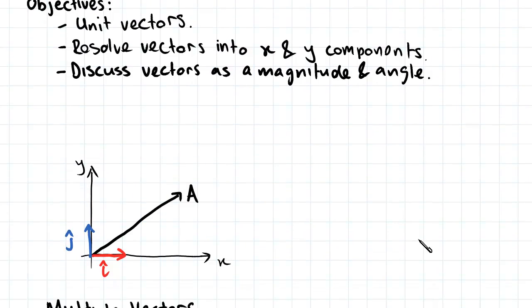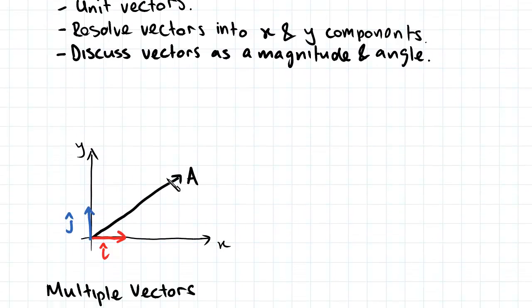Now what we have here is vector a written on an xy plot, and what we want to do is break this down into the x component and the y component. The way we're going to do that is by drawing lines from this tip here down to the axes to find these intercepts.